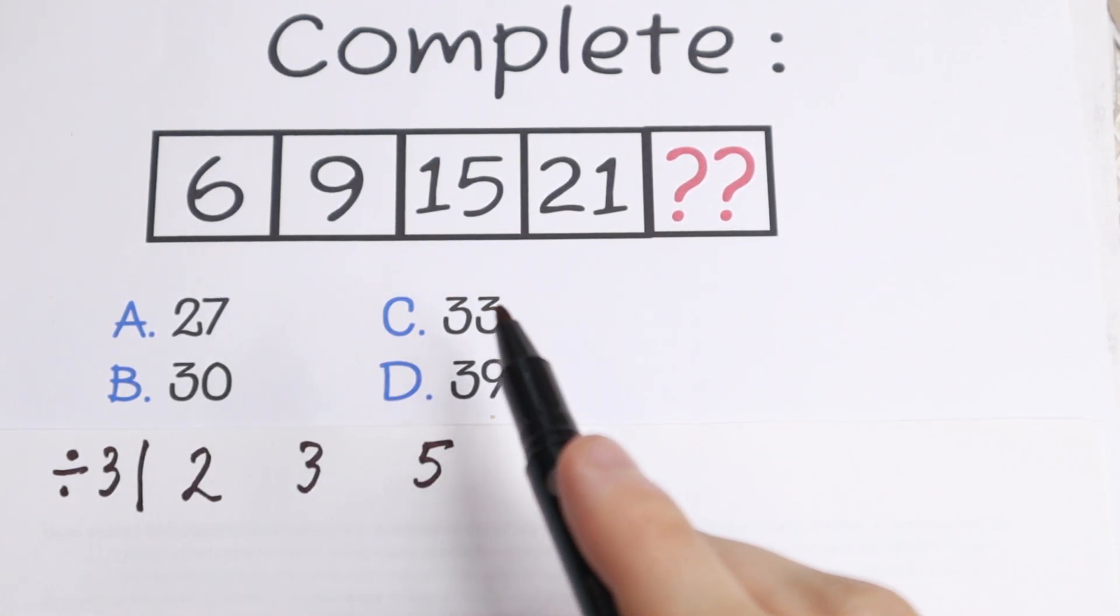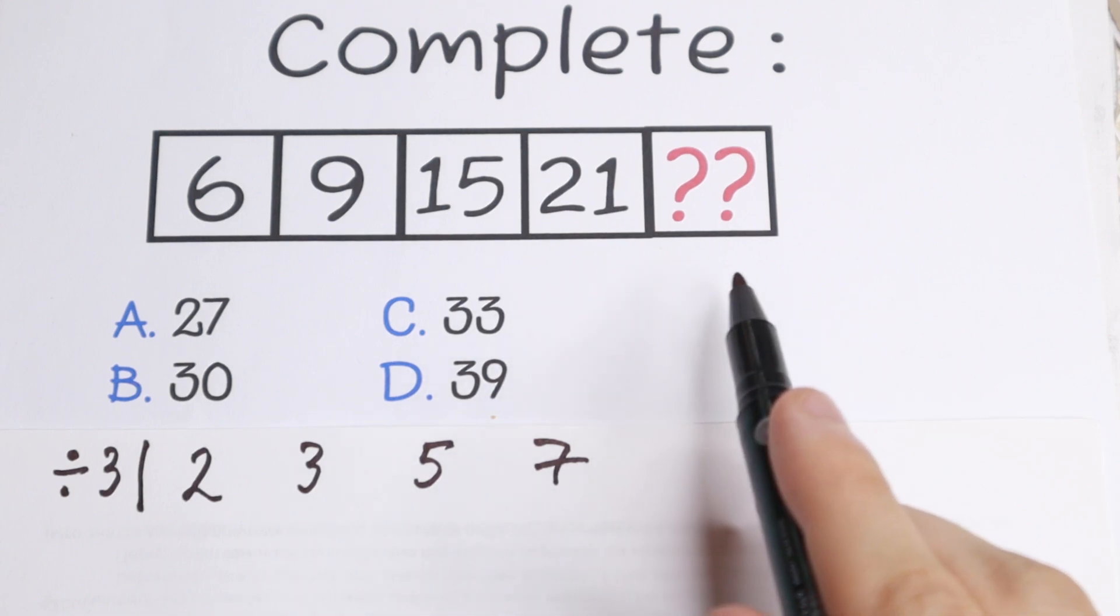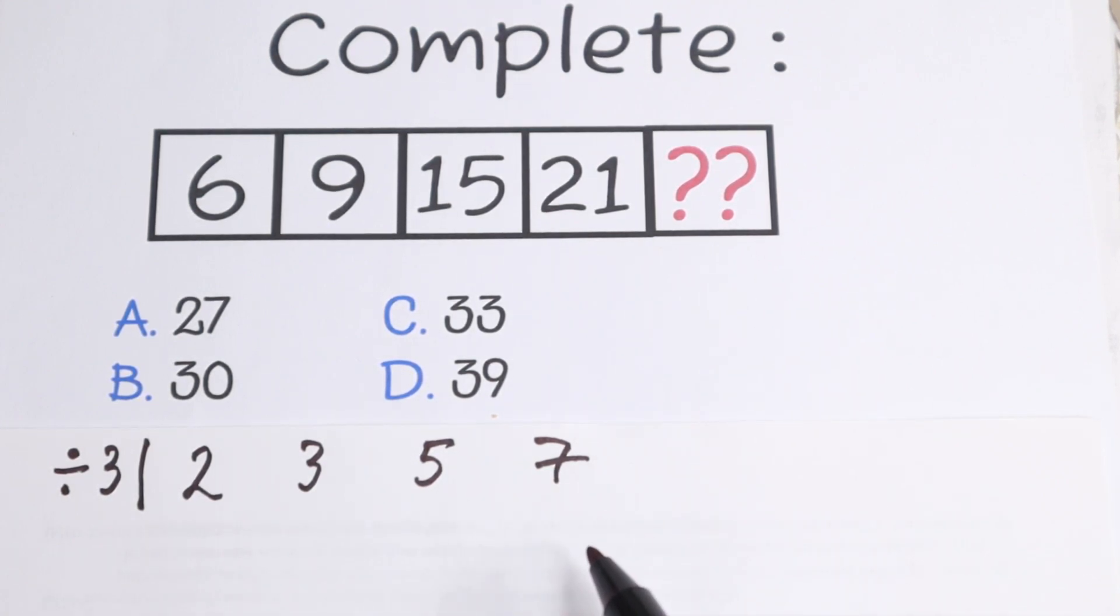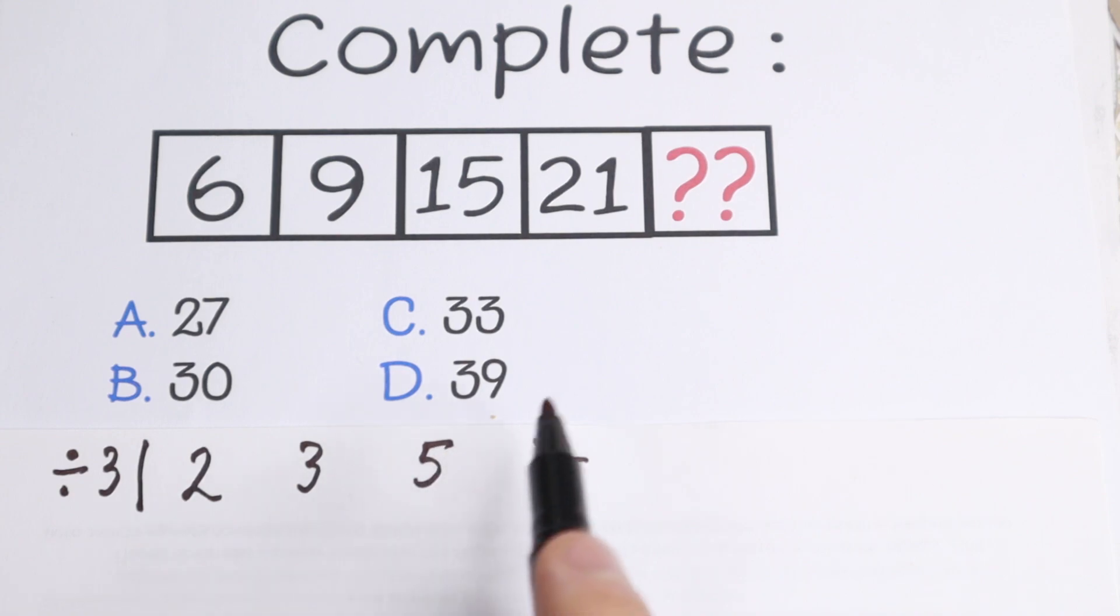So as you can see, we changed our series, this numeric series, to this one. Let's try to find the pattern between all of these numbers. Okay, we have 2, 3, 5, 7. But what is the pattern between all of these numbers? Because we still have even, we still have odd numbers. But what is the pattern between 2, 3, 5, and 7?